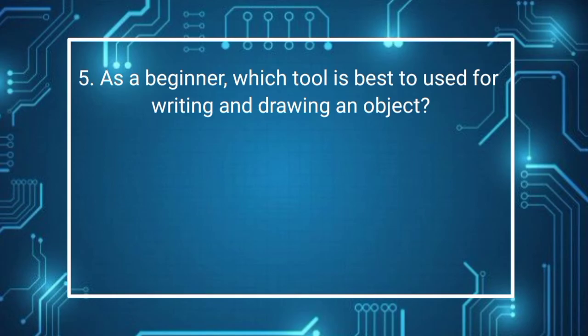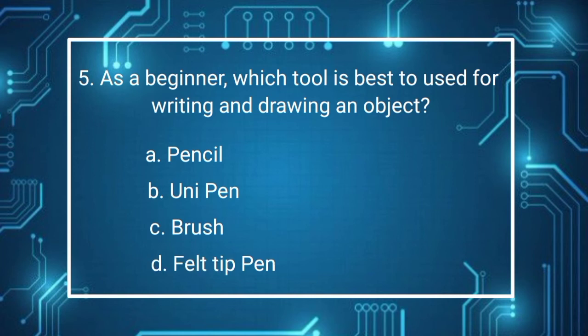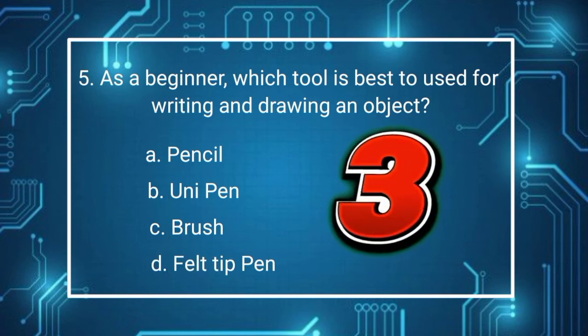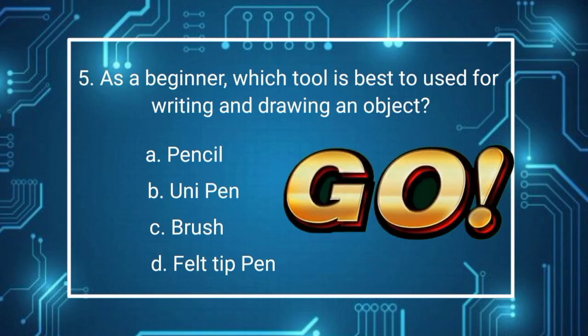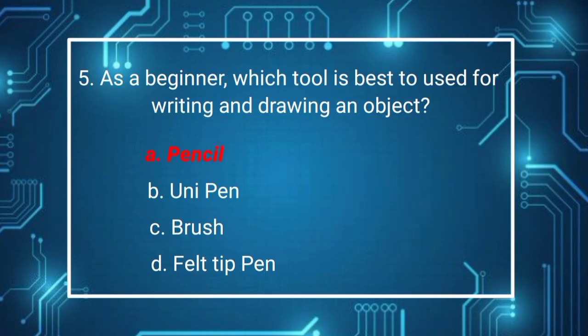Question number 5. As a beginner, which tool is best to use for writing and drawing an object? A. Pencil B. Unipen C. Brush D. Felt tip pen. 3, 2, 1, GO! If your answer is letter A, you are amazing.